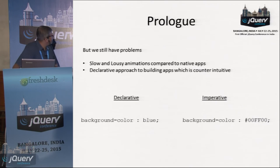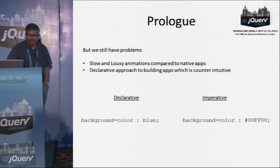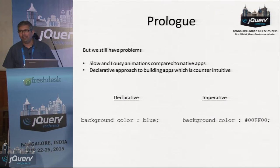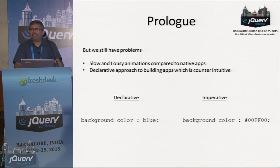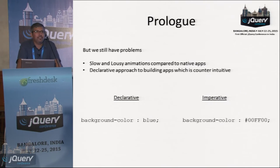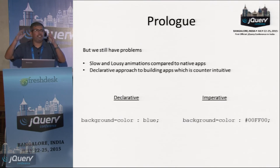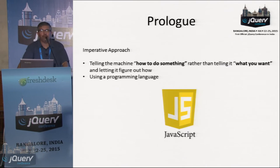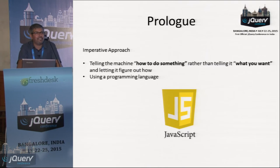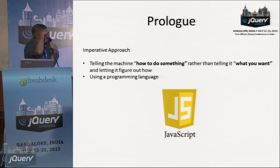There's one more problem with the current trend in web application development, which is around the declarative approach to coding. When you want to build animations and fluid UI interfaces supporting 3D, you cannot rely on HTML and CSS as a whole. HTML and CSS only allow you to declare the structure, and then the browser has to figure out how it has to be done. Whereas if you follow an imperative model, you exactly tell the machine how to do something - how to lay out the elements, how to animate them, how to translate them, how to rotate them.